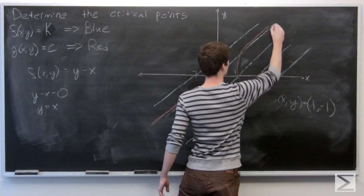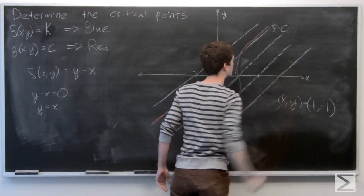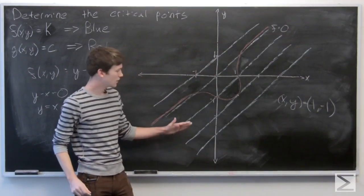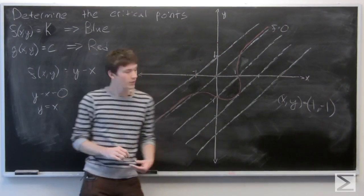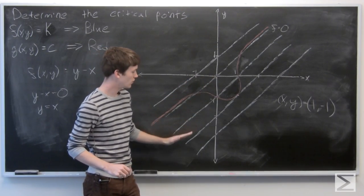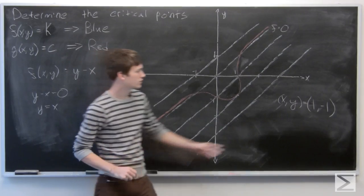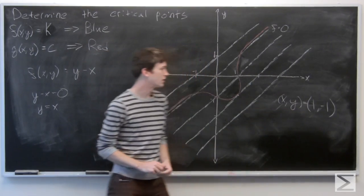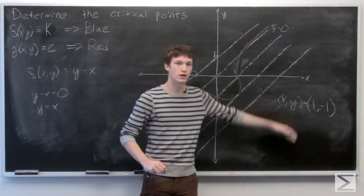So this is f equals 0 in this situation. And so then we can determine actually what level curve corresponds to having the point (x,y) equals (1, -1).